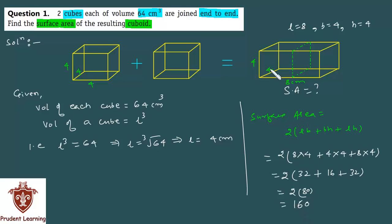To finally, jo surface area cuboid ka aapne find ki ha, 160 cm². Since aapne area find ki ha, to unit hoga cm², aur aapko volume given tha, isle unit cm³ tha.